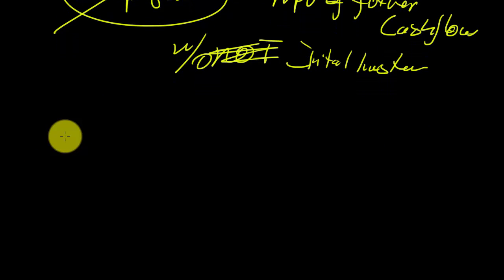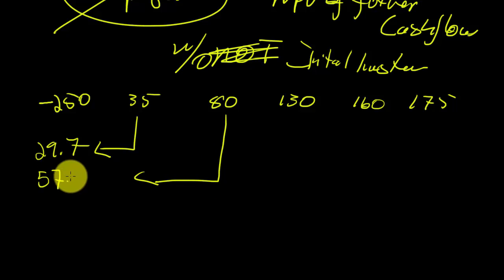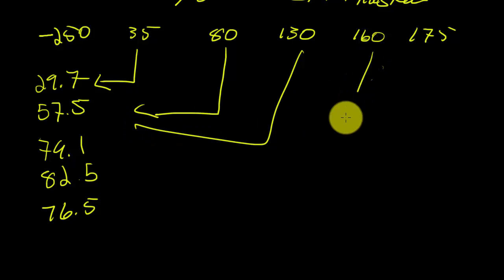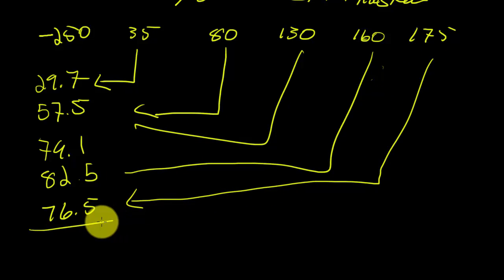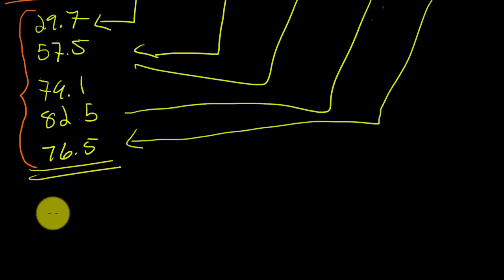So if you want to follow me in the book, this is negative 250, and 35, 80, 130, 160, and 175. If I discount these guys back, I get 29.7, and 57.5. Let me scroll back up. And the next one is 79.1, and 82.5, and 76.5. This one is that one. This one is that one. This one is that one. And I add these up. Note that I'm adding these up without the 250. I'm just adding up the present value of the future cash flows.